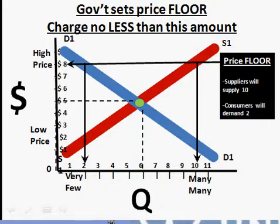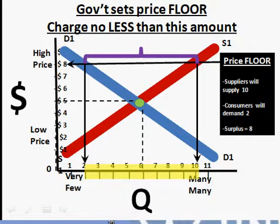So at that eight dollar price, suppliers are supplying ten million pounds, consumers are only willing to buy two million, and we end up with a surplus of eight million pounds of coffee in this example.